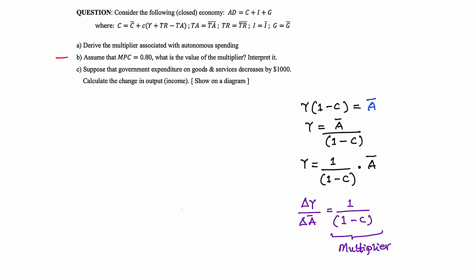Question B says: assume the MPC equals 0.8 — what is the value of the multiplier, and interpret it. MPC equals 0.8 simply means small letter C equals 0.8.